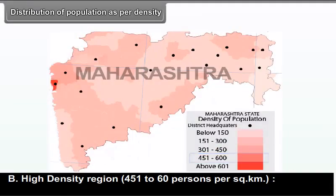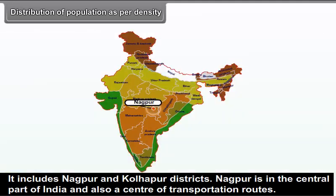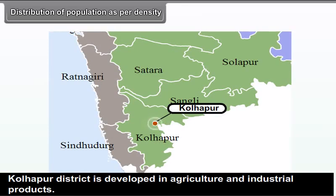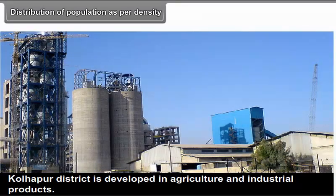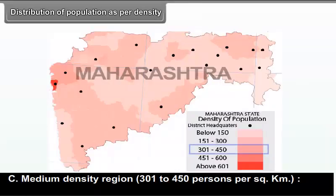B) High Density Region — 451 to 600 persons per square kilometer. This includes Nagpur and Kolhapur districts. Nagpur is in the central part of India and is a center of transportation routes. Kolhapur district is developed in agriculture and industrial products, so the density of population is high in these districts.